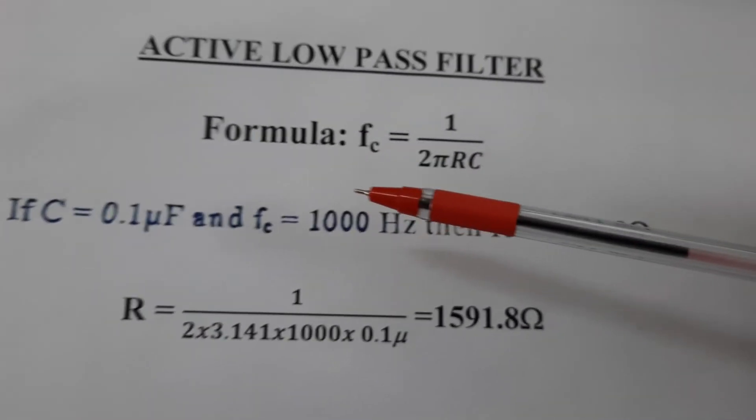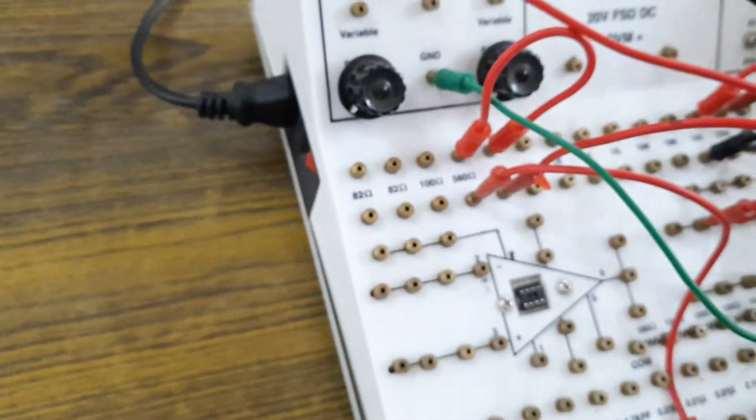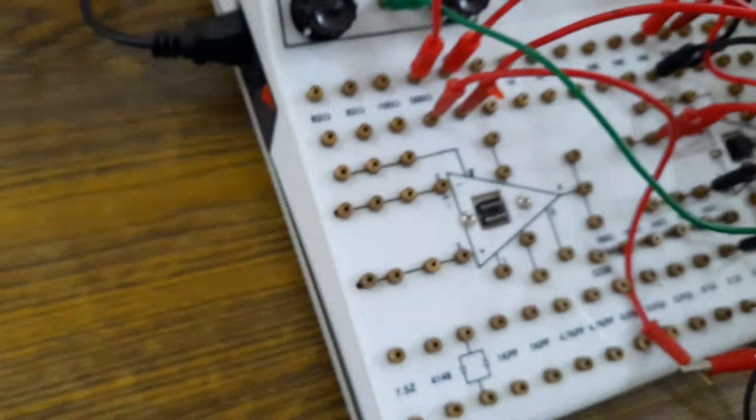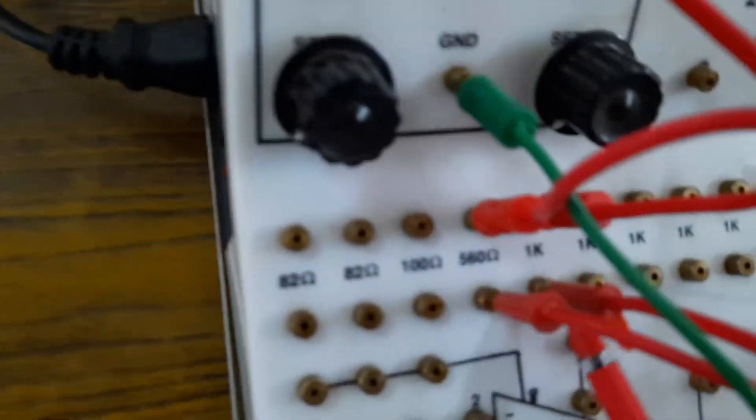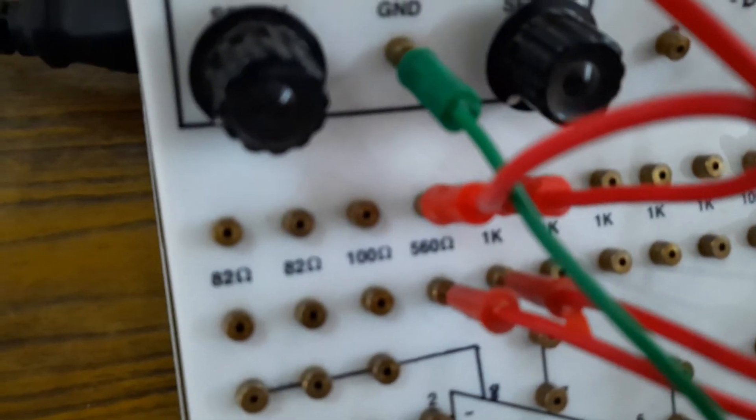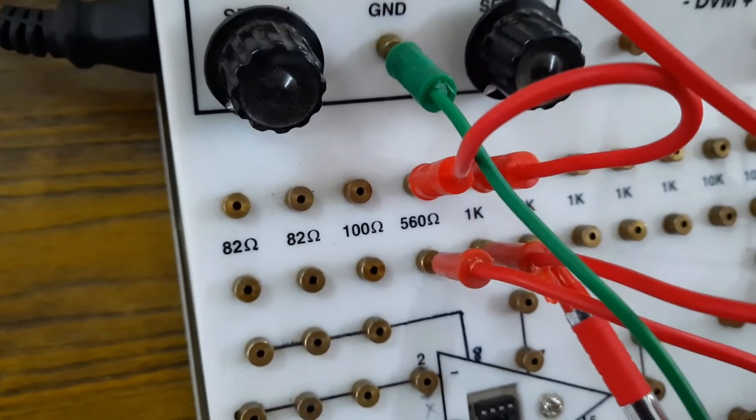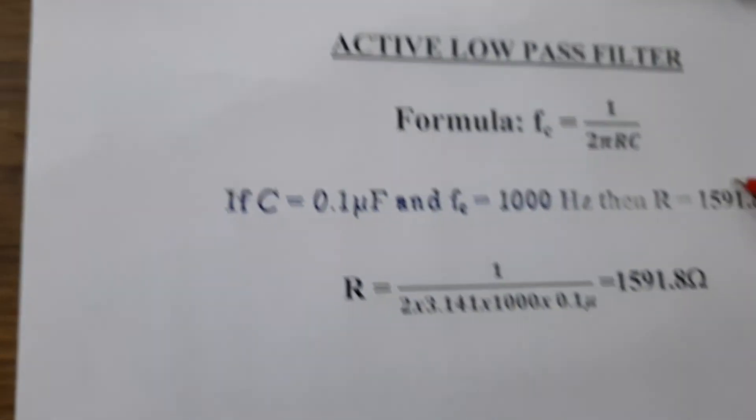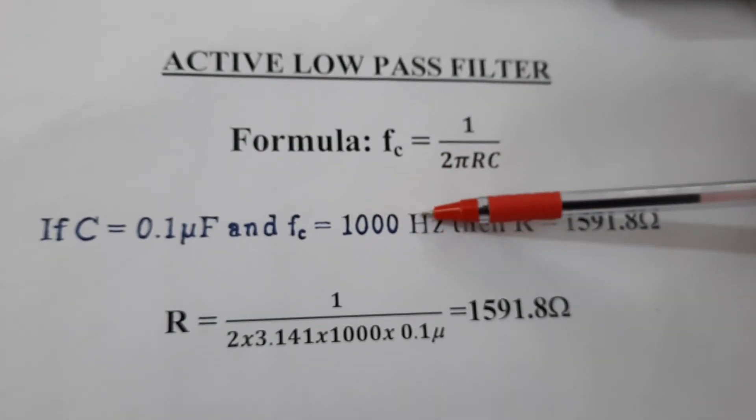The same values of C and R are being used in this particular kit which I am using to perform the experiment. In this kit, I am using 1560 ohms. Actually, the design value is 1592 ohms, but since it is not available in my kit, I will be using 1560 ohms, which is slightly closer to the actual design value, for which the cut-off frequency turns out to be 1020 hertz.